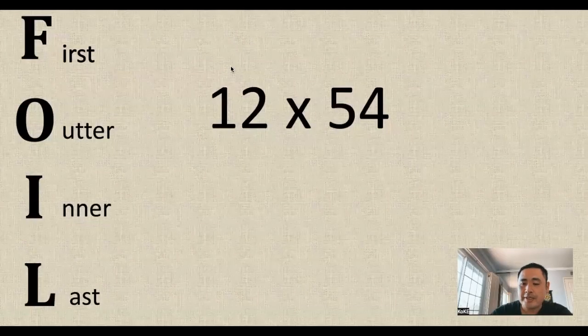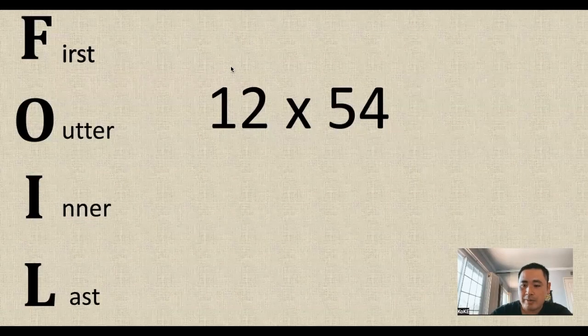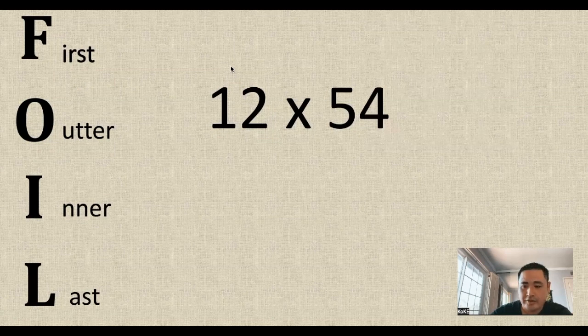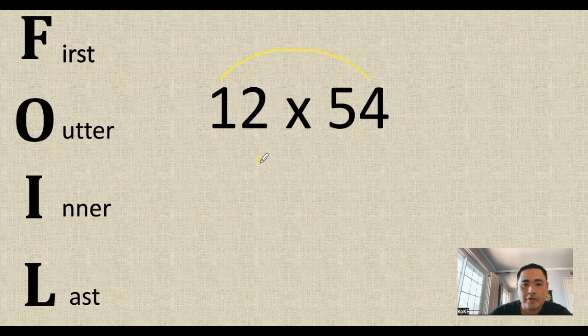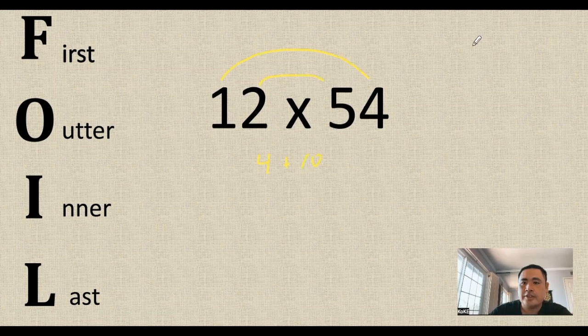All right guys, this problem has a slight variation at the end of the problem. So I wouldn't want you guys to miss it and get the wrong answer. So here we go. The outer here is the 1 and the 4, so 4. 2 and the 5 gives us 10. So I'm going to write the 14 on the top.